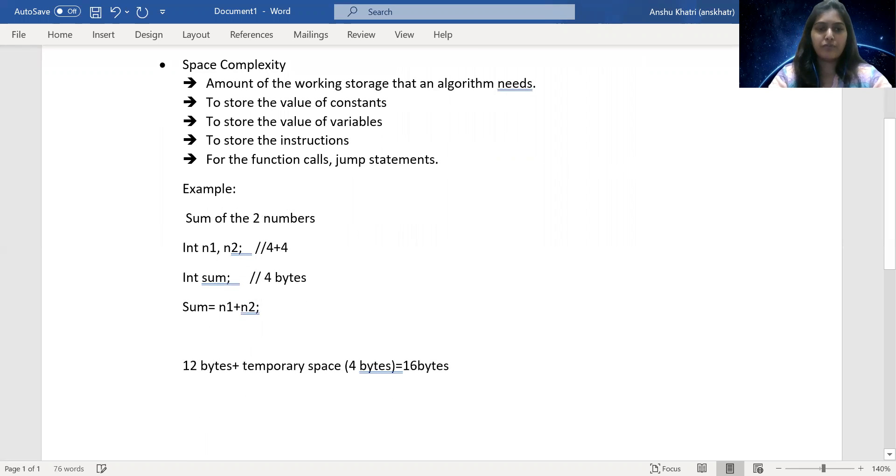So even if my n1 is equal to 100 and n2 is equal to 200, that case my sum is 300. But what I'm taking, I'm taking 12 bytes for this operation plus four bytes for the extra operations. Then total is 16 bytes.